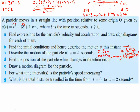Find the position when changes in direction occur. When the particle changes direction, velocity equals zero — we already solved for that at t = 1 and t = −1. We need the positions: at t = 1, s = 1³ − 3(1) + 1 = 1 − 3 + 1 = −1. At t = −1, s = (−1)³ − 3(−1) + 1 = −1 + 3 + 1 = 3. So direction changes occur at positions −1 and 3.